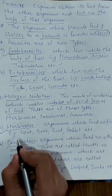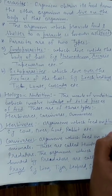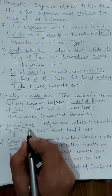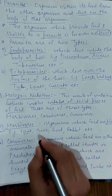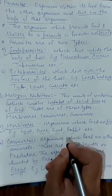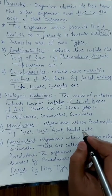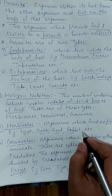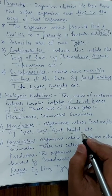Holozoic nutrition is of three types. The first type is herbivores — organisms which feed on plant material. Examples of herbivores are cow, deer, goat, rabbit, horse, and buffalo.